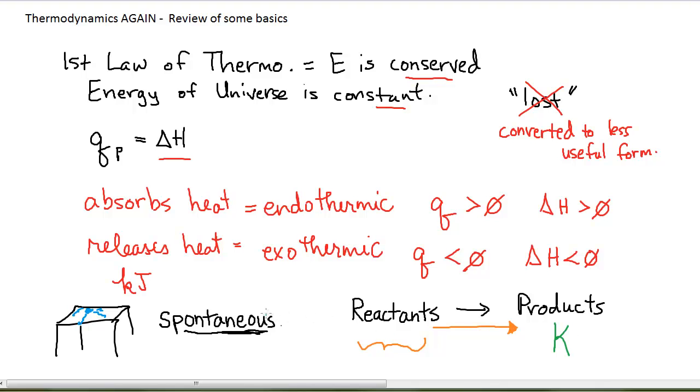If a process is spontaneous, we're talking about an equilibrium constant for that process that is greater than one. In other words, it's product favored.